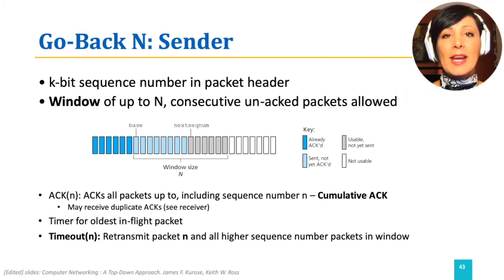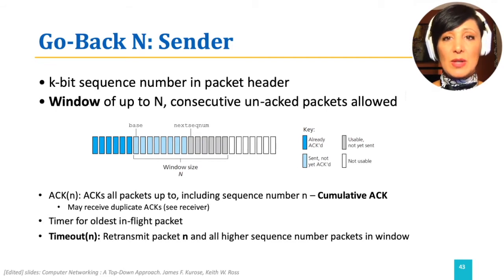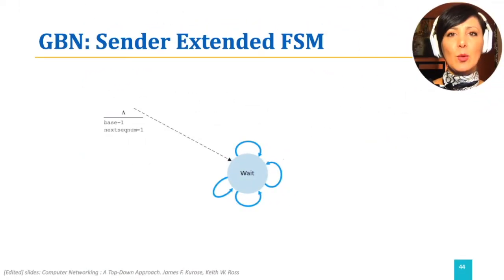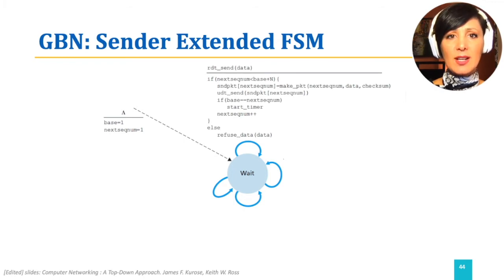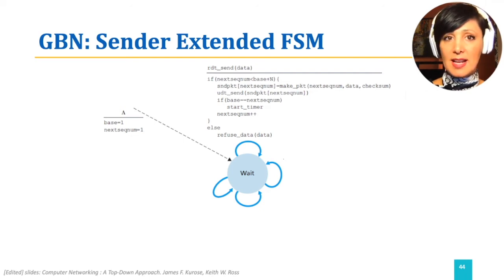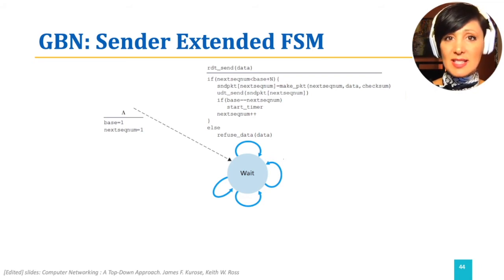In Go-Back-N, when a timeout happens for packet n, that packet and all packets with higher sequence numbers in the window will be retransmitted. When data from the upper layer arrives using rdt_send, the sequence number is checked. If the sequence number is not within the window range, it will be refused. But if it is within the window, the packet is made and sent. If the packet is the first unacknowledged packet on the fly, the timer is started.